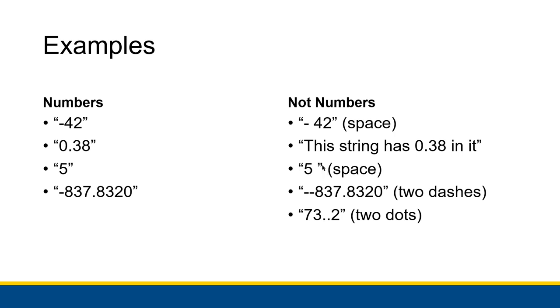5 space also would not be a number. Minus minus 837.8320 is not a number because that has two dashes. 73.2 is not a number because of the two dots like this. Or if it was four dash two instead of negative 42, that would also not be a number. There are things that might look similar to numbers, but actually aren't numbers. The string has to only contain a valid number.